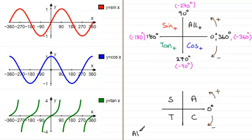One that I often say to students is All stations to, let's say, Coventry. And clearly what I've got here is that the initial letters, A for all being positive, S for sine being positive, T for tan being positive, and C for cosine being positive.